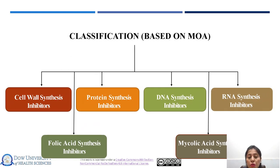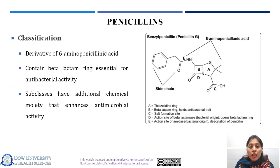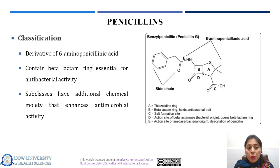Based on the mechanism of action of antibiotics, they are classified into different categories according to their site of action. Some are cell wall synthesis inhibitors. Some interfere with the synthesis of DNA and RNA, while some inhibit protein synthesis. Some are mycolic acid synthesis inhibitors, basically used for infections caused by Mycobacterium tuberculosis. In today's lecture, we will talk about cell wall synthesis inhibitors, and specifically we will first talk about penicillins.